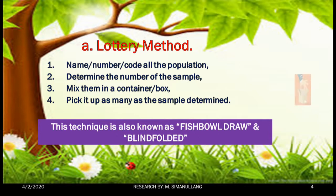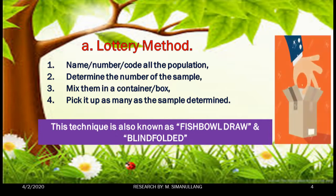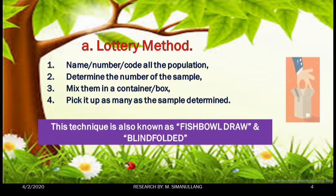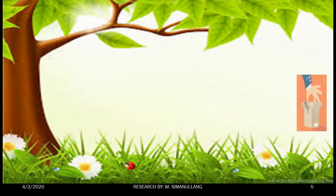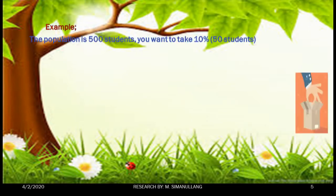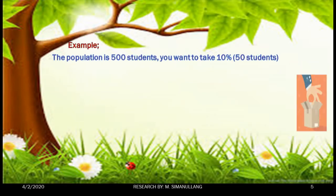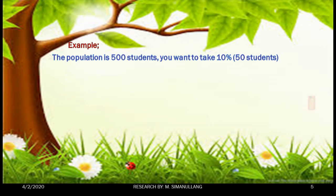Following these procedures, this technique is also known as a fishbowl draw or blindfolded. Now let's have an example by applying the lottery method. In our example, the population is 500 students, and we are going to take 10% from them.